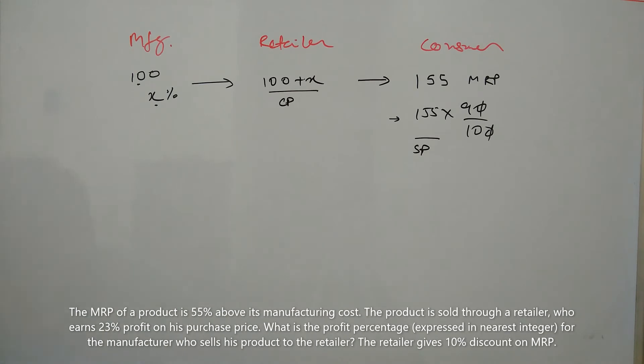23% means that cost price plus 23% of cost price equals selling price. We know this from the profit and loss formula.